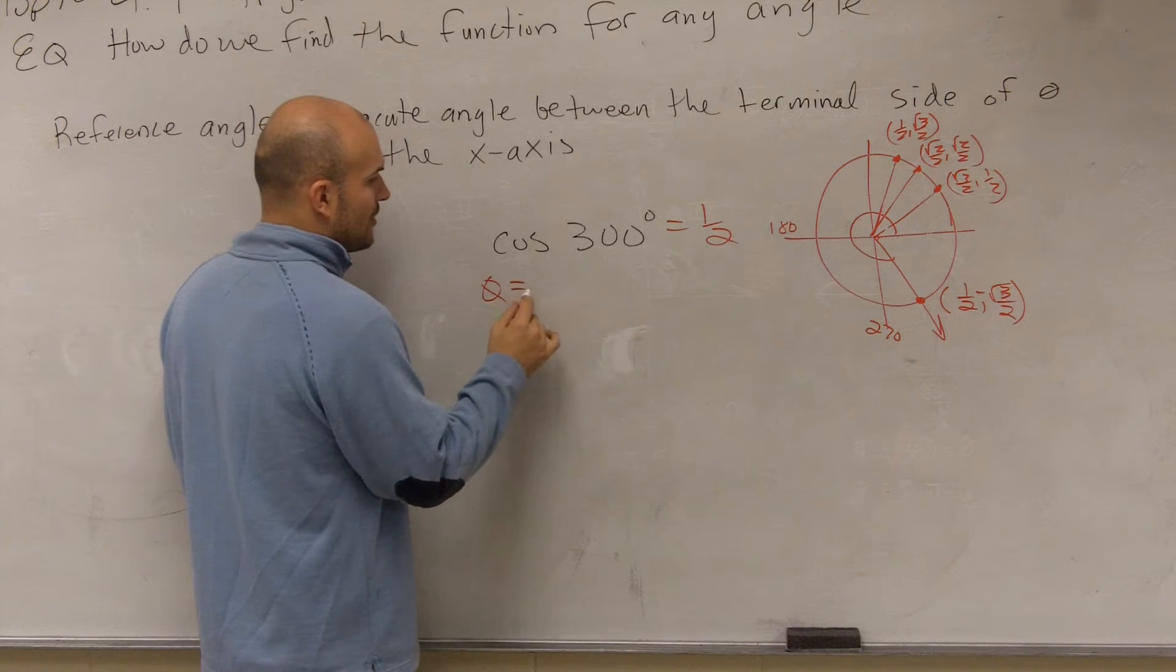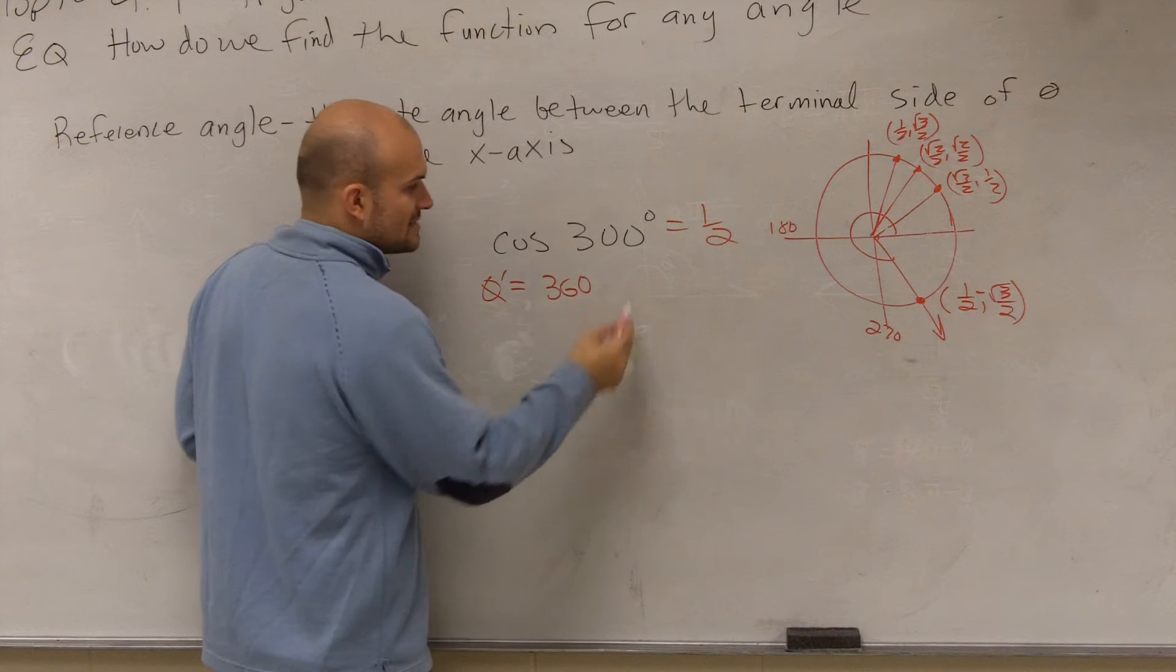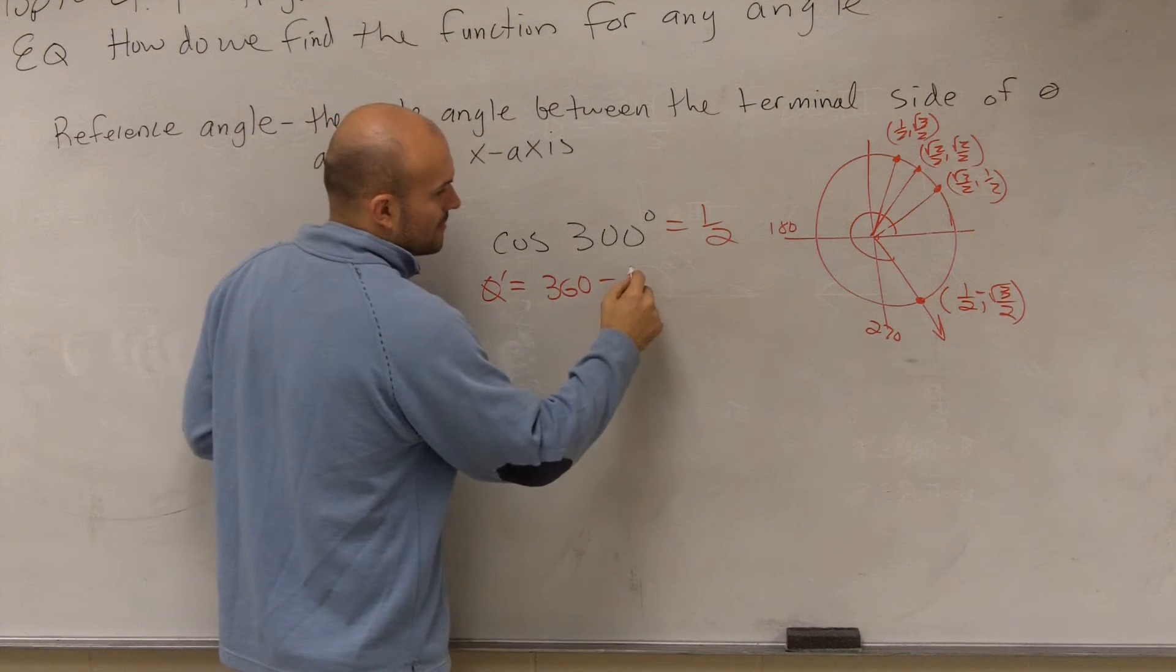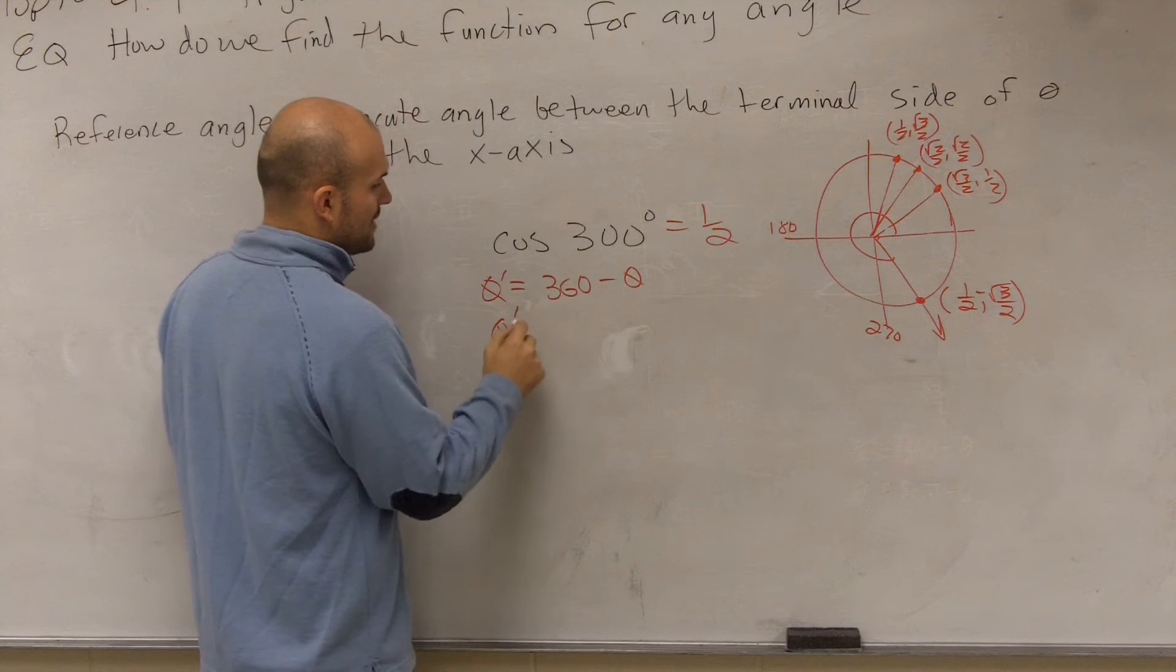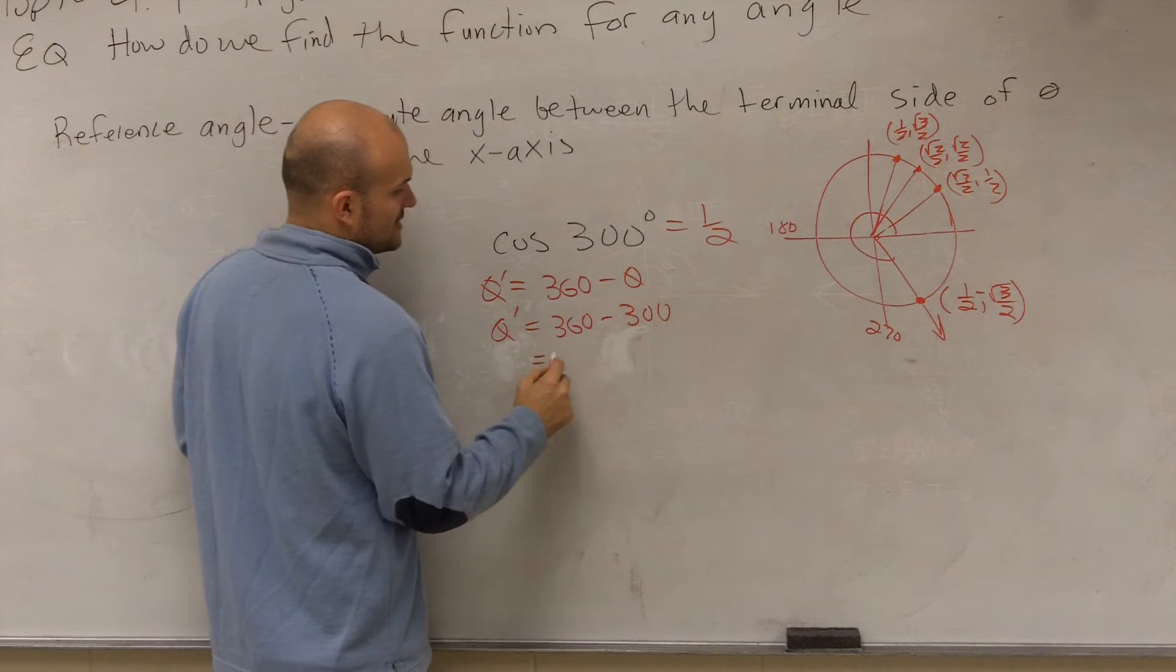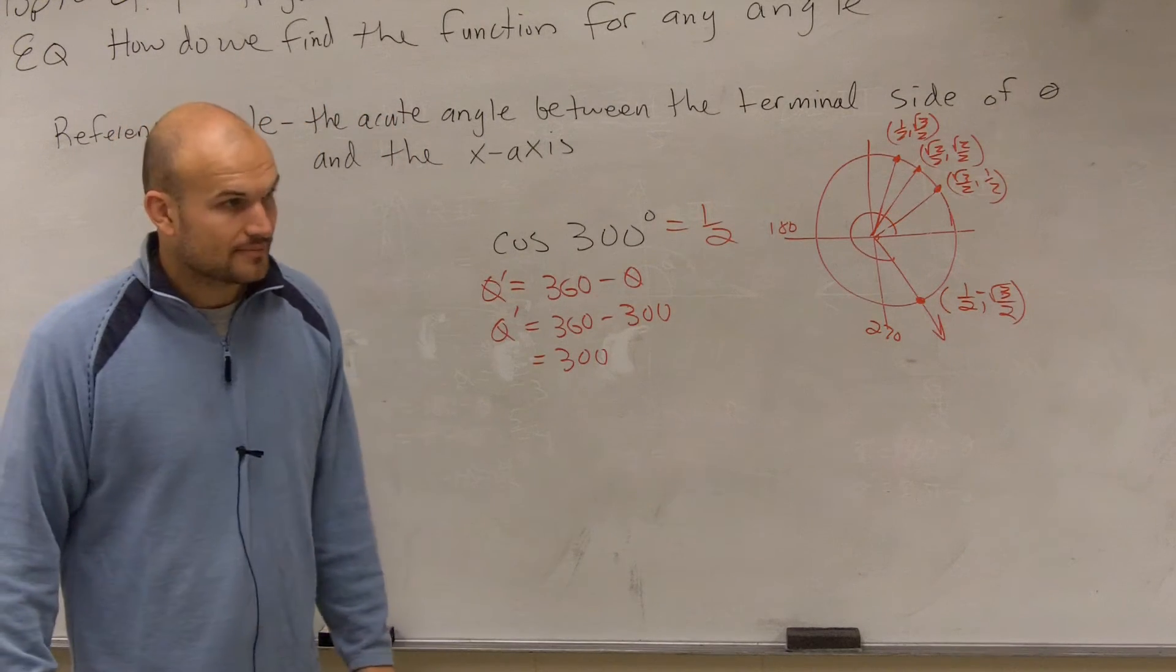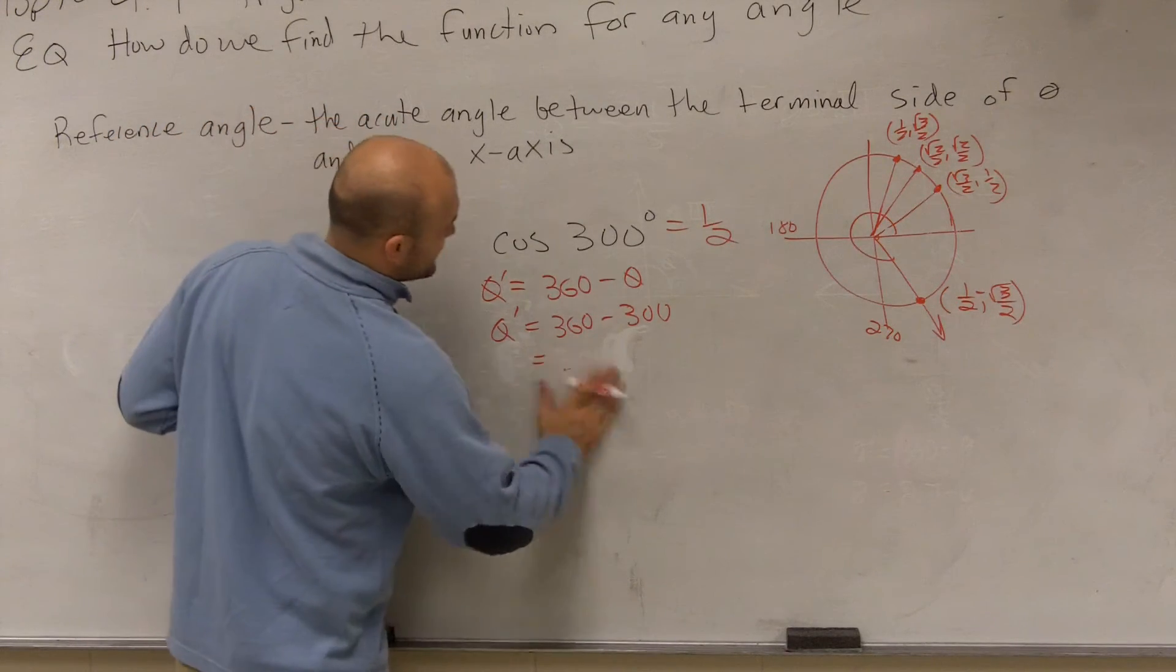So the reference angle, theta prime, is going to equal 360 degrees minus theta. So theta prime equals 360 minus 300, which is equal to... I'm sorry, is equal to 60 degrees, right?